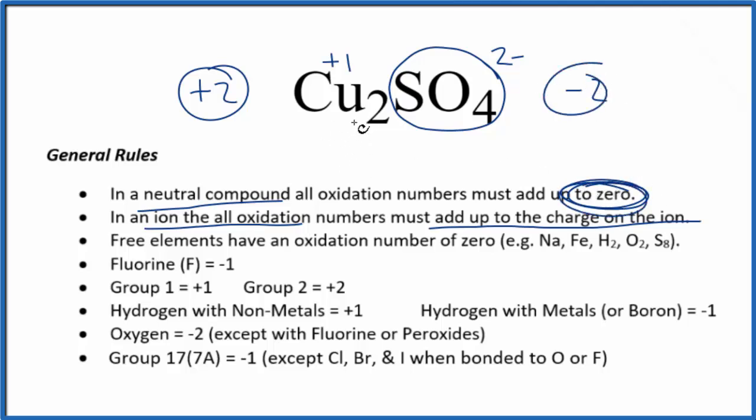So the oxidation number on the copper in Cu2SO4 is plus 1. Each copper atom is plus 1.